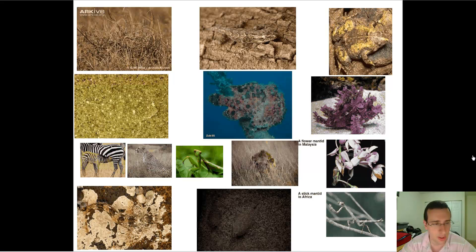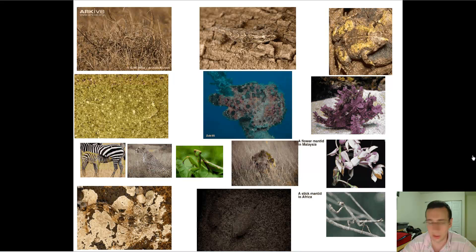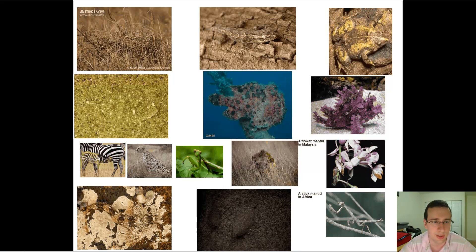Sometimes animals even attract prey towards them using camouflage, and then they're done. This is what we call camouflage — disappearing within the environment or copying elements of the environment to hide yourself or a structure like your nest. You can do this either through behavior or through your actual color pattern. In the next video, we'll talk about mimicry types that may not exactly involve aposematic coloration or hiding within the environment — see you then.